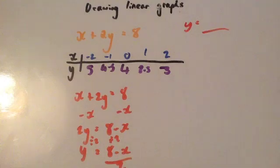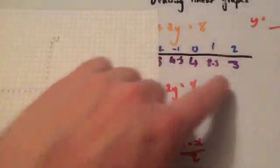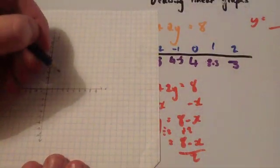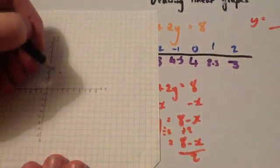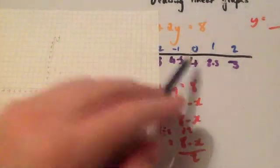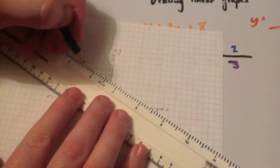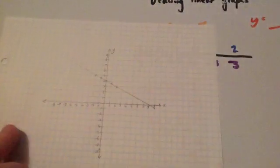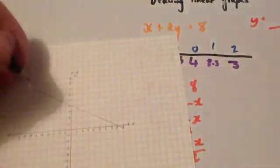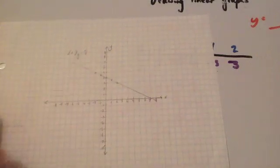We're going to plot these on a coordinate grid — here's one I prepared earlier. First coordinate (2,3): 2 across, 3 up. Then (1, 3.5): 1 across, 3.5 up. Then (0,4): 0 across, 4 up. Then (-1, 4.5): minus 1, 4.5. And (-2, 5): minus 2, 5. You can see the points are in a nice straight line, so get your ruler, line it up, and draw a nice straight line. There — I have now drawn the graph x plus 2y equals 8. That's how you draw a graph using an xy table.